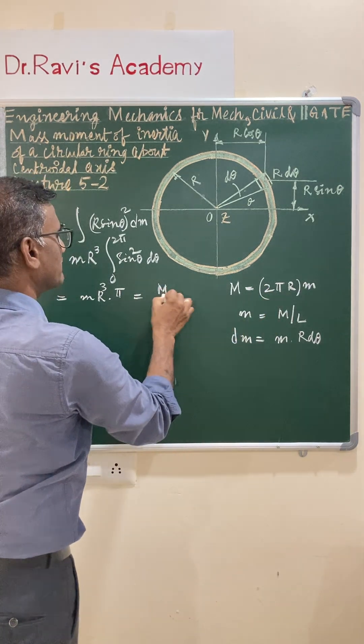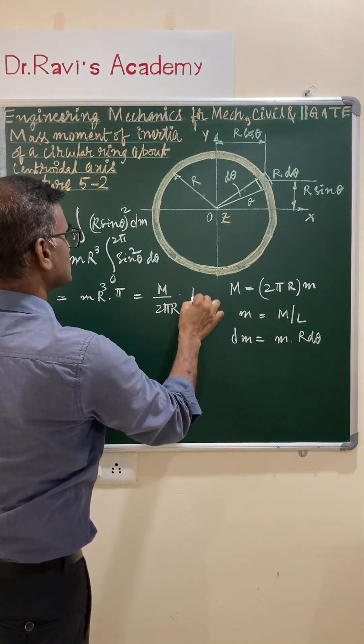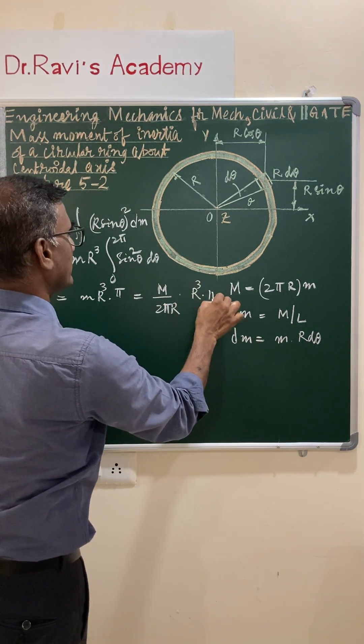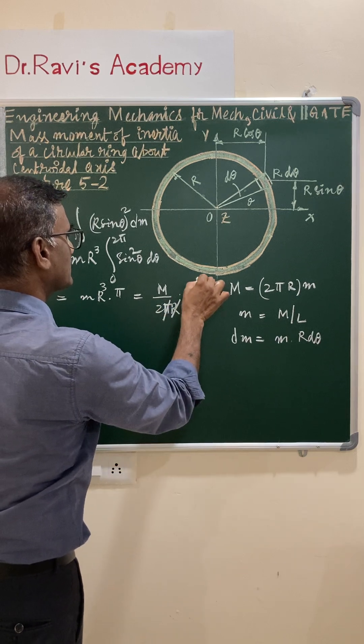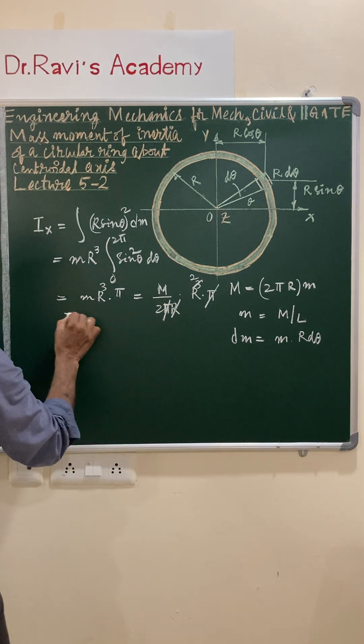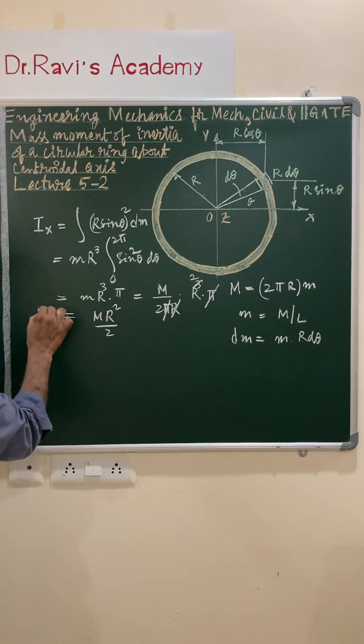Multiplied by r³ into π, you have r² and the value is Mr²/2. So this is the Ix value.